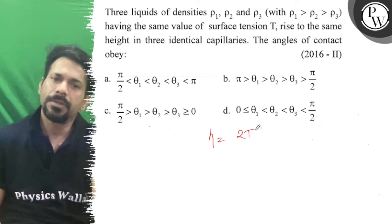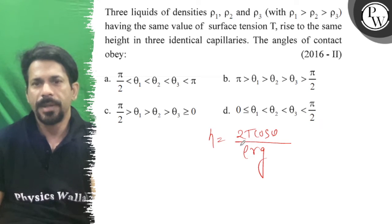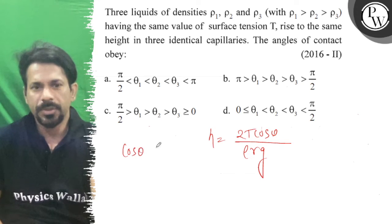So h = 2T cos θ / (ρrg). For the liquids to rise to the same height, h must be inversely proportional to ρ.